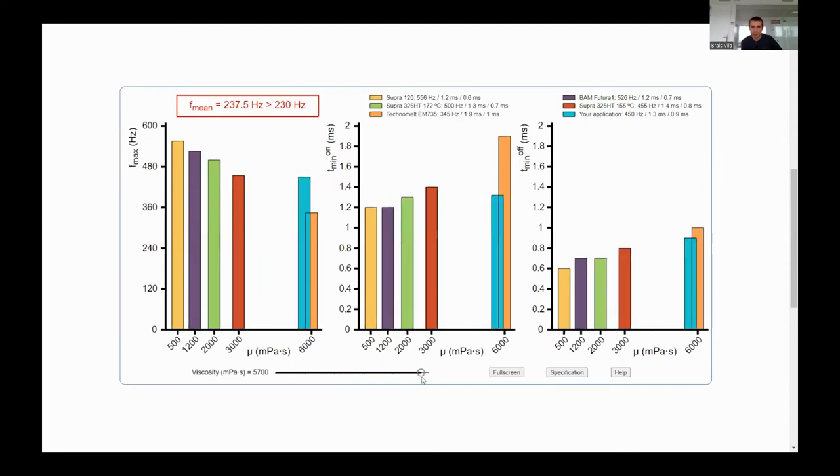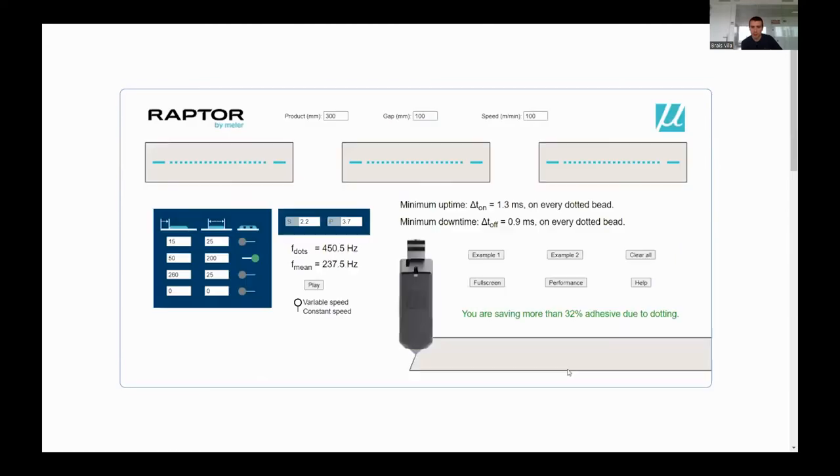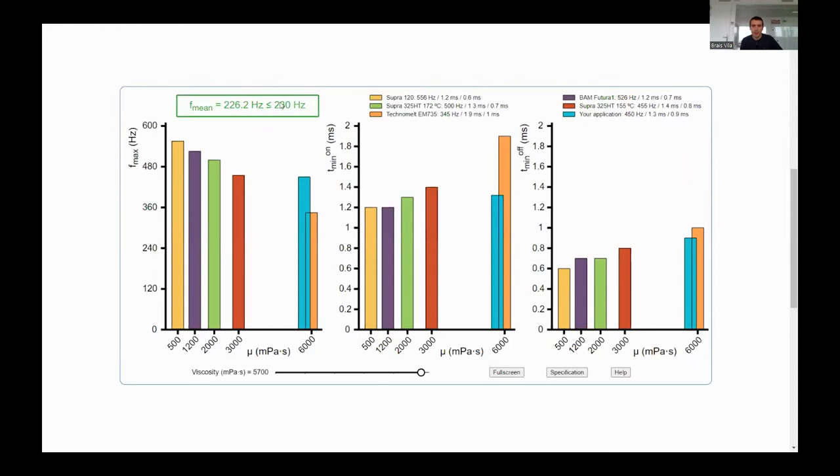This would not be feasible, for instance, because the frequency that I need to have is higher than what the applicator can do. On top of that, I see here that the average frequency is marked in red - 237 is bigger than 230 because there is a limitation for thermal reasons on the average frequency of 230 hertz. In this case, if I was a salesperson, what I would do is say you can increase the gap in the application. You would reduce the throughput a little bit, but in that case the average frequency is below 230 and we will not run into thermal problems.